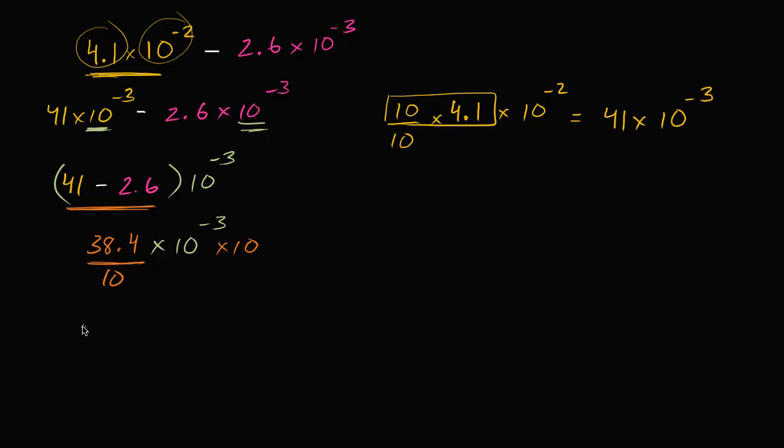So 38.4 divided by 10 is 3.84. And then all of this business, 10 to the negative 3 times 10 is 10 to the negative 2 power. So this is going to be 3.84 times 10 to the negative 2 power.